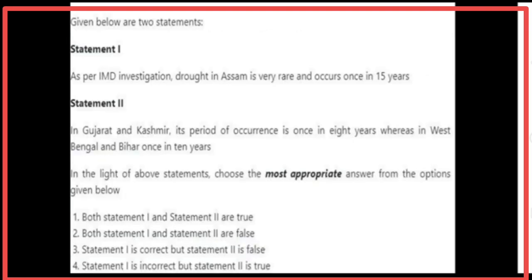Given below are two statements. Statement 1: As per IMD investigation, drought in Assam is very rare and occurs once in 15 years — Statement 1 is correct. Statement 2: In Gujarat and Kashmir, the period of occurrence is once in 8 years, whereas in West Bengal and Bihar it is once in 10 years — Statement 2 is false. The most appropriate answer is Statement 1 is correct and Statement 2 is false.